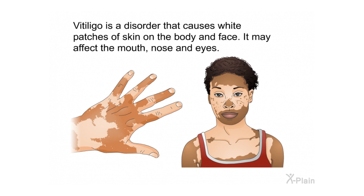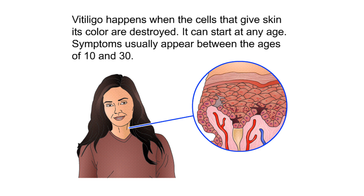Vitiligo is a disorder that causes white patches of skin on the body and face. It may affect the mouth, nose, and eyes. Vitiligo happens when the cells that give skin its color are destroyed. It can start at any age, but symptoms usually appear between the ages of 10 and 30.